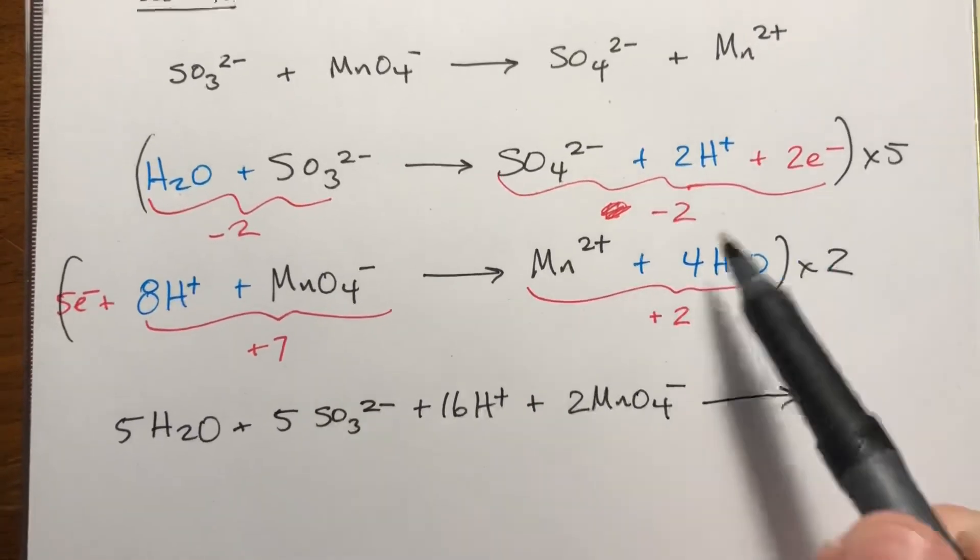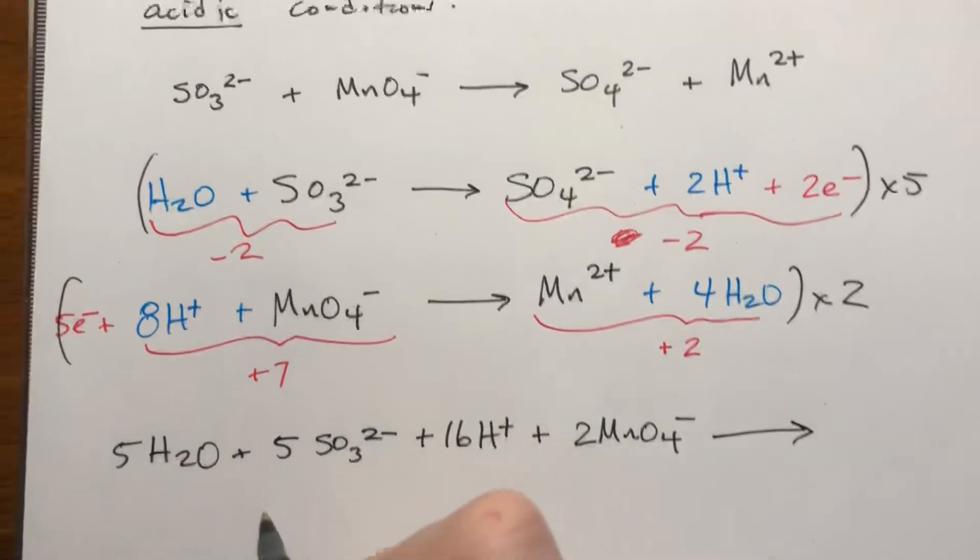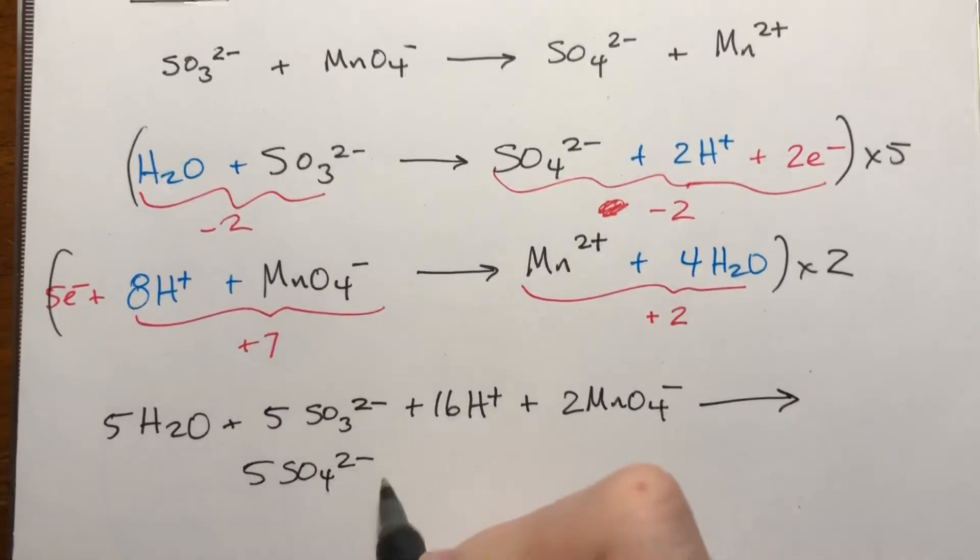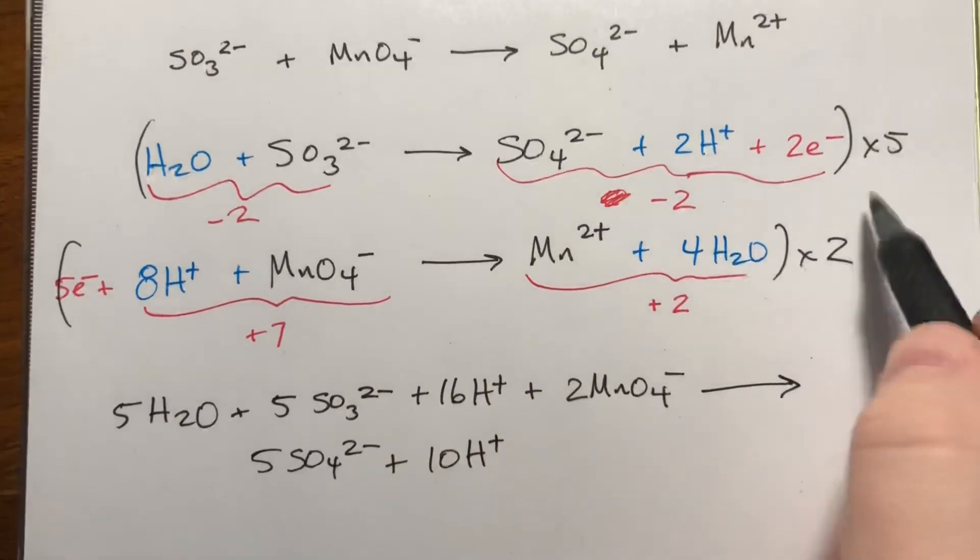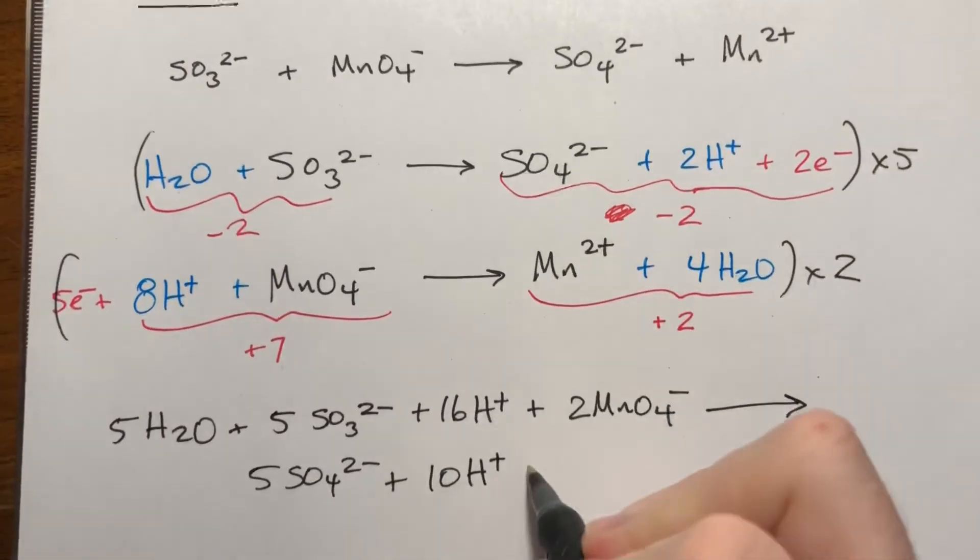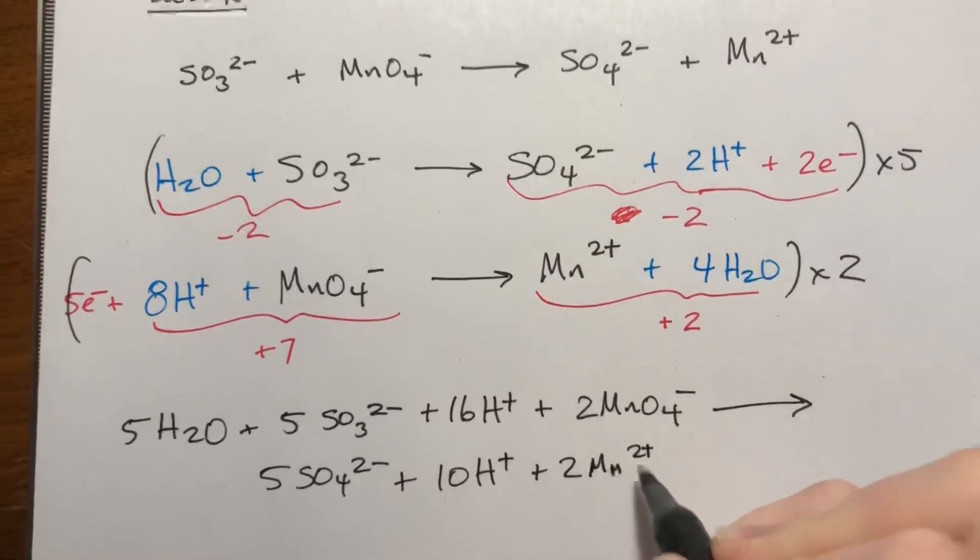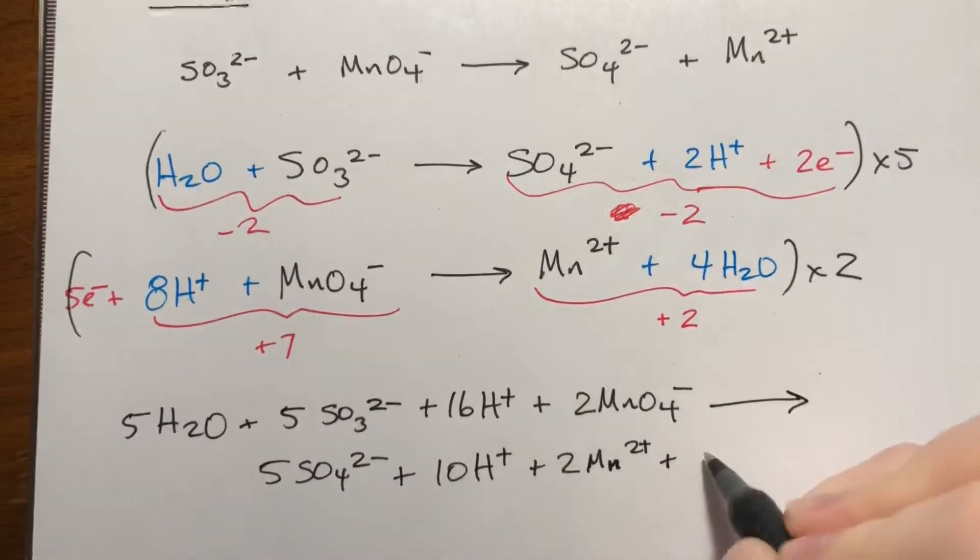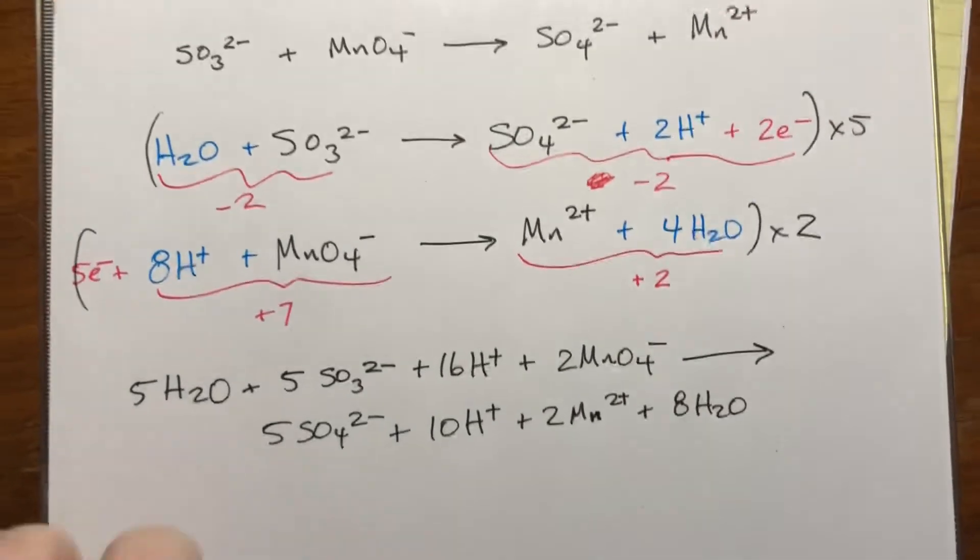Now we do the same thing for our products. Five times all of this, we're ignoring the electrons, so five SO4 2-, plus five times two would be ten H pluses, and then down here two times Mn2+. Please be really careful and diligent about writing your charges. Two times four would be eight waters.